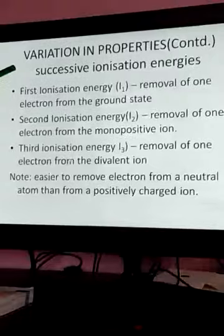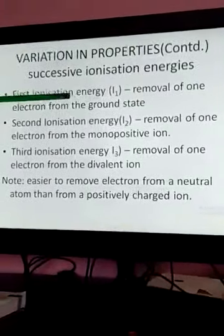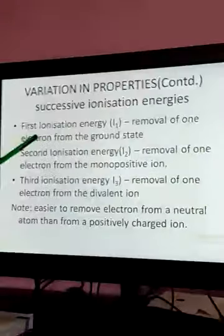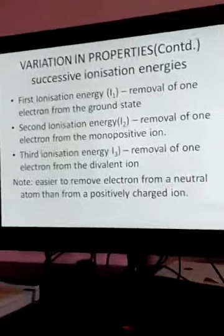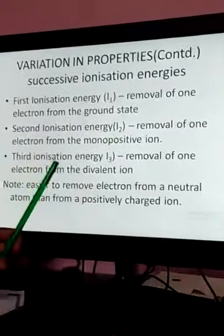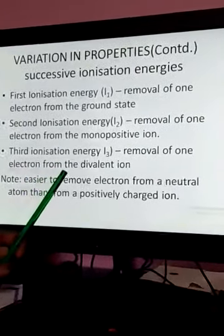And of course, there are successive ionization energies. The first ionization energy, that is known as I1, and here it is the removal of one electron from the ground state. And second ionization energy, that is I2, removal of one electron from the monopositive ion. It has already become a cation.